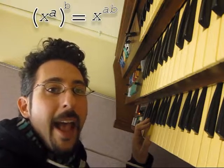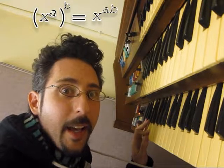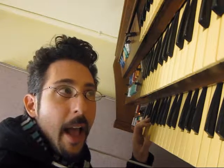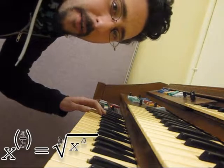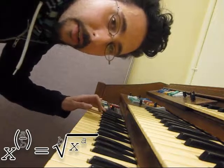X to the a all to the b is x to the a times b. And x to the power of a over b, the b root of x to the a you see.